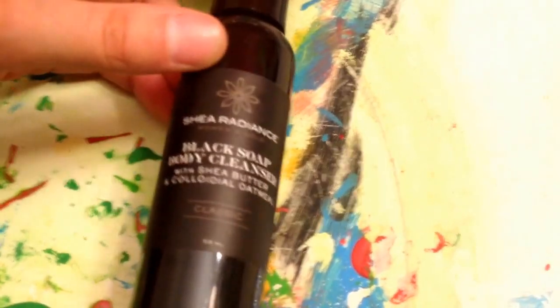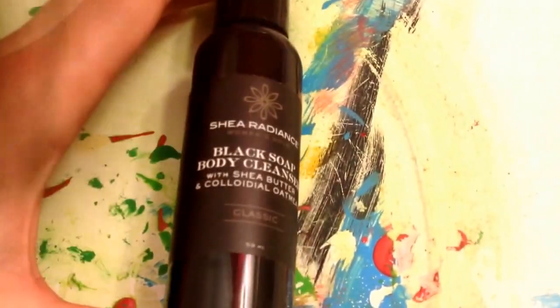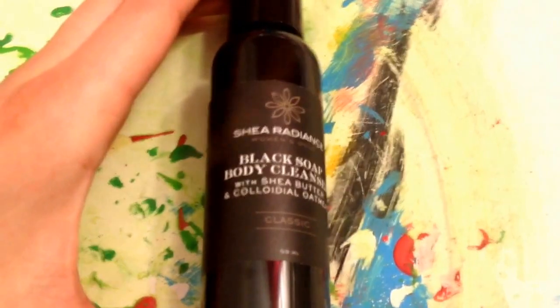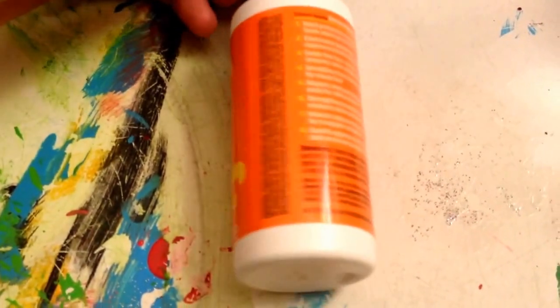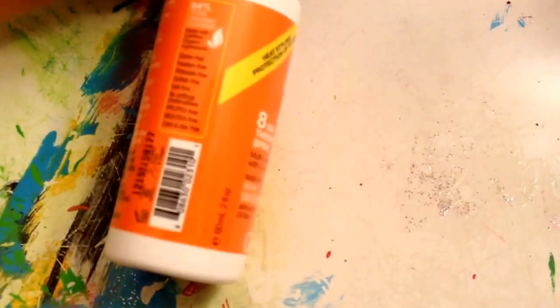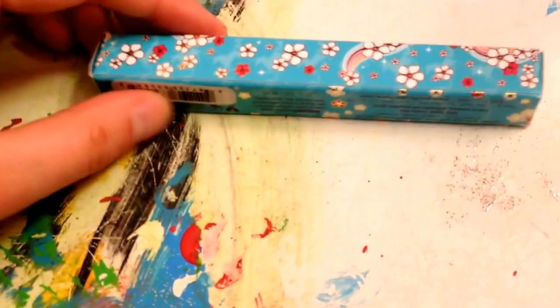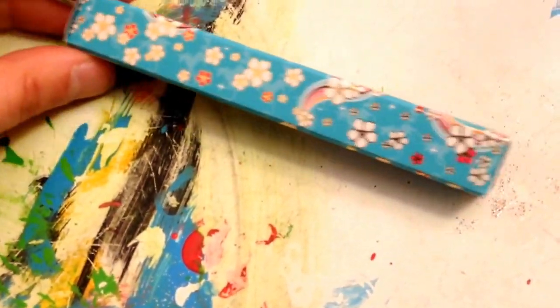Next is this black soap body wash with coconut oil, it's a decent sized sampler. Okay, the next two things are this thermo heat spray for your hair, which I don't know what that is. Hopefully I can figure it out from the directions. And this Pacifica sampler of perfume.